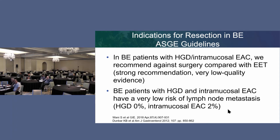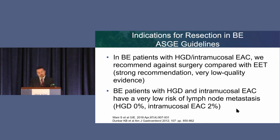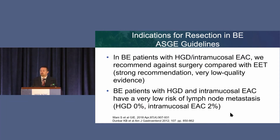Patients with high-grade dysplasia and intramucosal cancer have a very low risk of lymph node metastases. If it's proven to be only high-grade dysplasia, the risk of lymph node metastases is zero. If it's only intramucosal cancer, it's 2%. So those patients can be treated curatively, and you've avoided surgery.